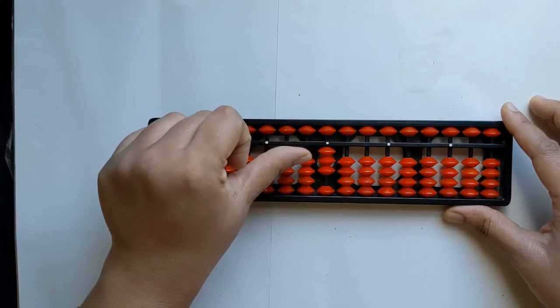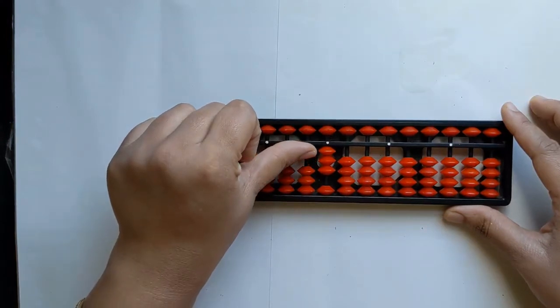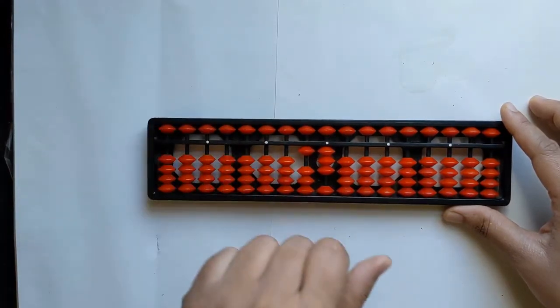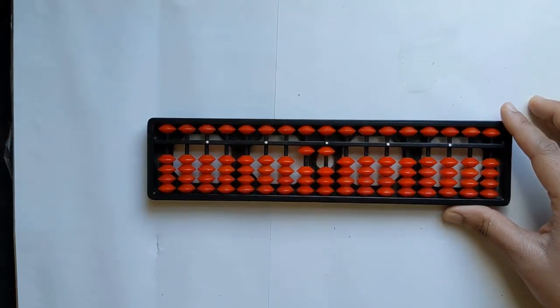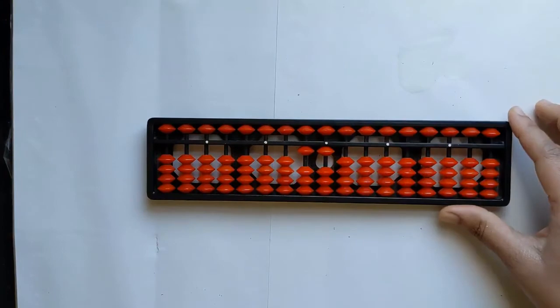8's pair is 2, so we add 10 and remove 2, and we got 11.